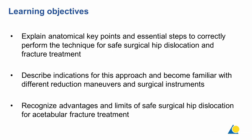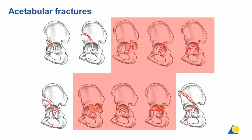These are the ten types of acetabular fractures as described by Le Tonel. On the upper row are the five elementary fracture types and in the lower row the more complex associated fracture types. Six out of these ten fracture types are accessible through a posterior approach: posterior wall, posterior column, transverse fracture, and in the combined fractures, posterior column with posterior wall, T-shaped, and transverse associated with posterior wall.